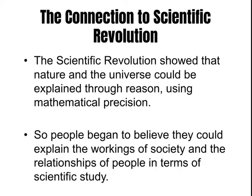The scientific revolution was a cause of the Enlightenment because in the 1600s, scientists began to show that nature and the universe could be explained using reason, mathematical precision, and logic. People then began to believe that they could explain the workings of society and how people interacted using the same scientific terms.